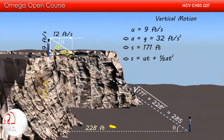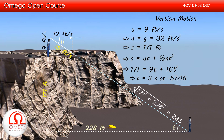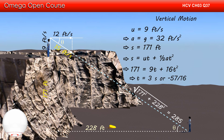Putting the values, we get 171 = 9t + 16t². Solving the equation, we get t = 3 seconds or t = −57/16 seconds. Rejecting the negative root, we get the time of flight as 3 seconds.